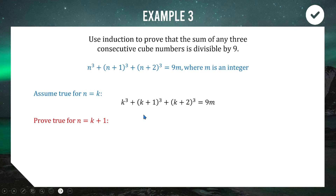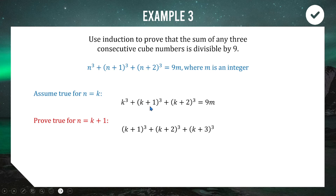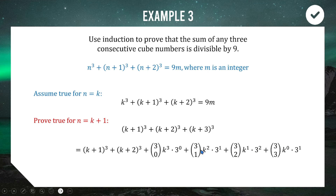For the proof step, we increase each k to k+1: the expression becomes (k+1)³ + (k+2)³ + (k+3)³. We don't want to expand (k+1)³ or (k+2)³ since those appear in our assumption. The term that sticks out is (k+3)³, so we expand that. Using the binomial theorem: ³C₀·k³ + ³C₁·k²·3 + ³C₂·k·3² + ³C₃·3³, which expands and simplifies.